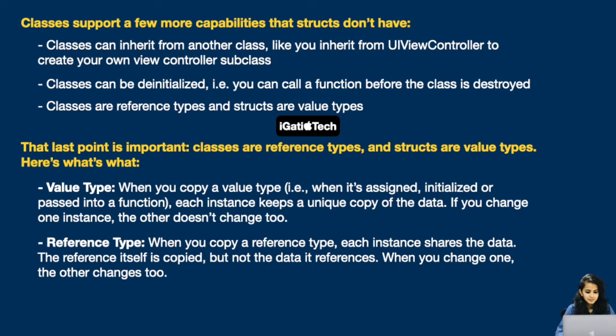Classes support a few more capabilities than structs. Classes can inherit from another class — for example, you inherit from UIViewController to create your own subclass. Classes can be de-initialized. Classes are reference types and structs are value types. With value types, each instance keeps a unique copy of the data — if you change one instance, the other doesn't change. With reference types, each instance shares the data — when you change one, the other changes too.